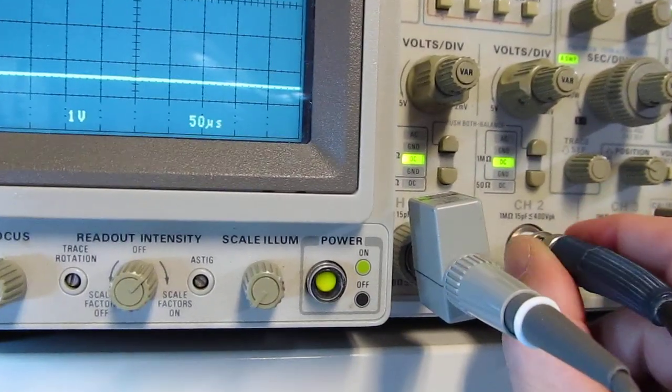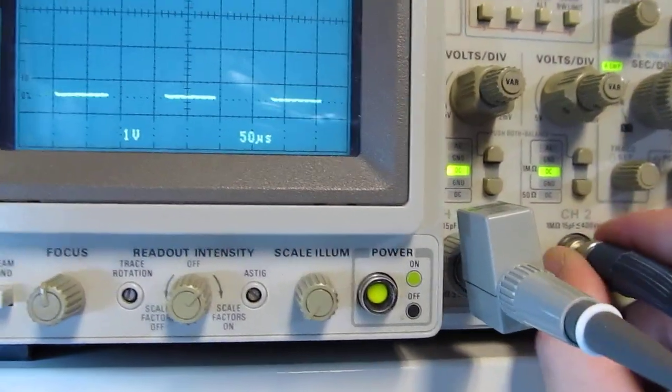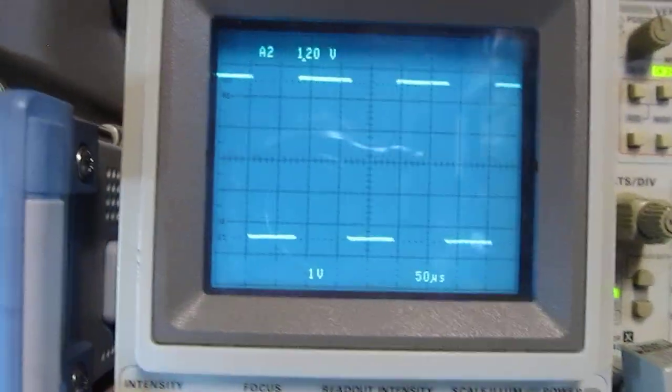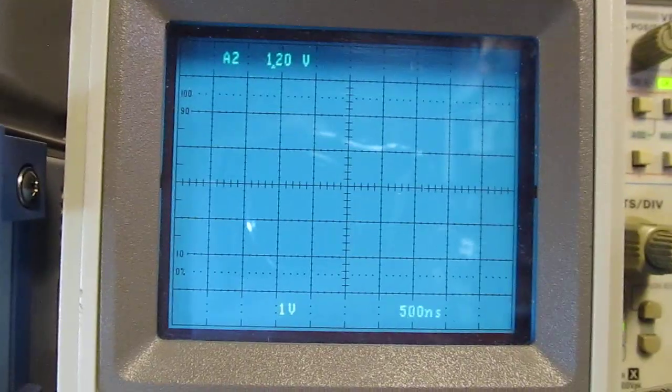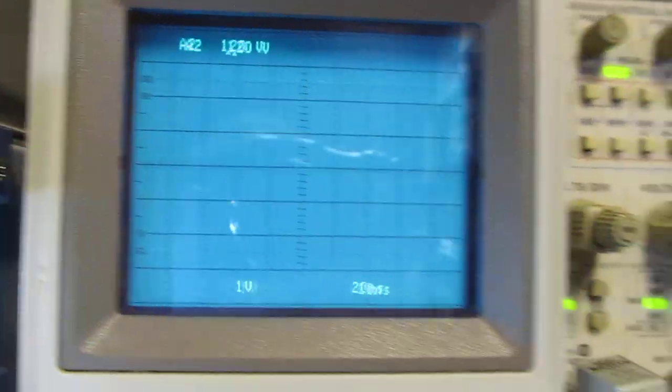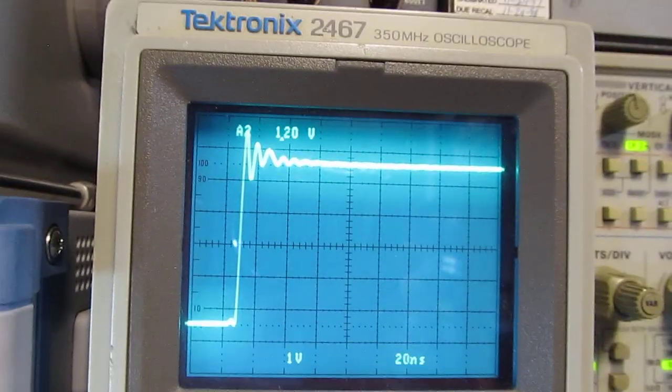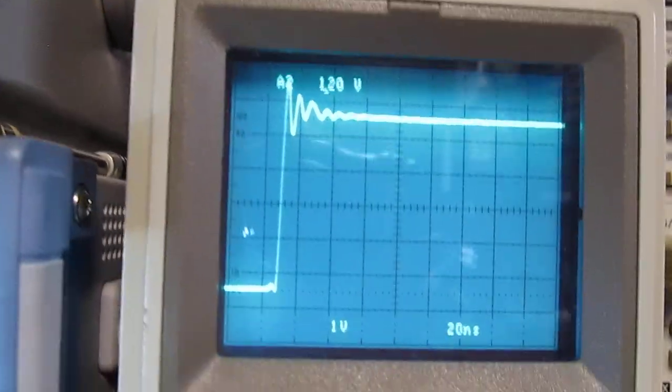Let's bring that back over here. We plug this in. Looking through the camera instead of at the scope, there's the output. If we speed up the sweep speed on the scope and turn the intensity up a little bit, I can see what that rising edge looks like.